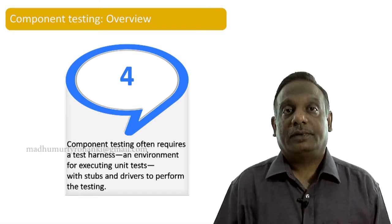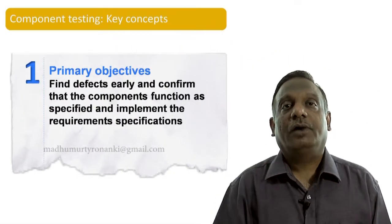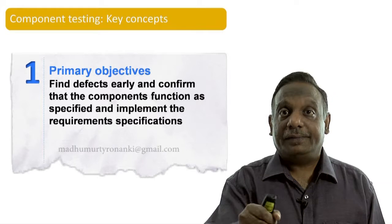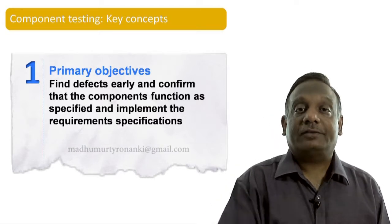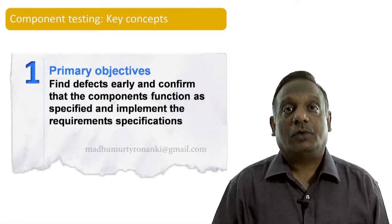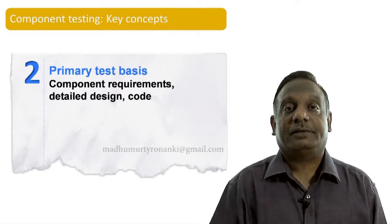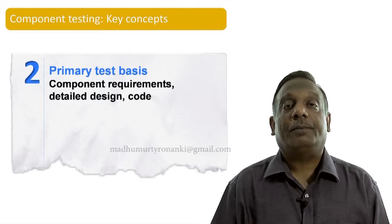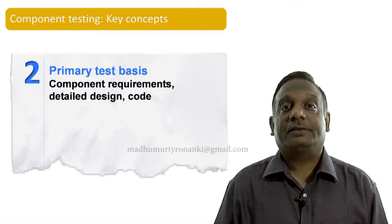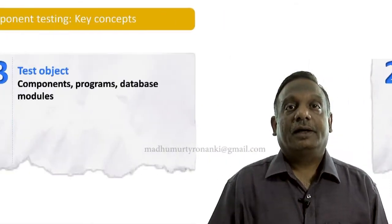For every level of testing, we need to understand some key concepts. The primary objective of unit level testing is to find defects early and confirm that components are functioning as specified and implement the requirement specifications. The primary test basis — the information we use to perform component testing — includes component requirements, sometimes the detailed design, and the code itself.